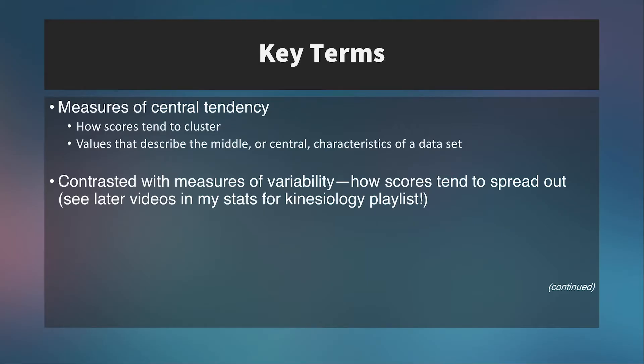So first, some key terms. What does measures of central tendency even mean? Really, it's just a description of how scores tend to cluster. These are values that describe the middle or central characteristics of a data set. So how does this data trend, and where does it really cluster?